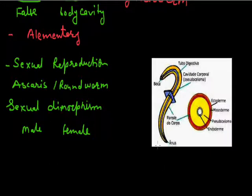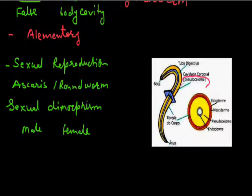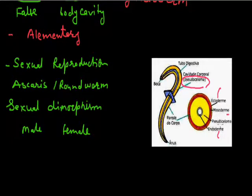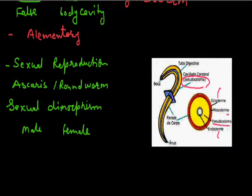This is the Ascaris animal. It has a mouth as well as an anus, so it has a complete alimentary canal. It is pseudocoelomate — the body cavity is present but it is not lined by mesoderm, so the body cavity is pseudocoelomate.